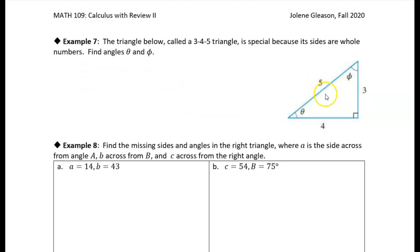There are a number of different ways we could approach this problem. One way is to use sine. The sine of theta equals opposite over hypotenuse, so three over five.